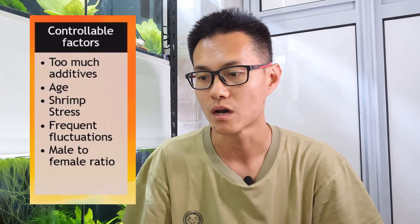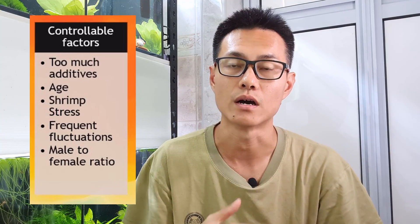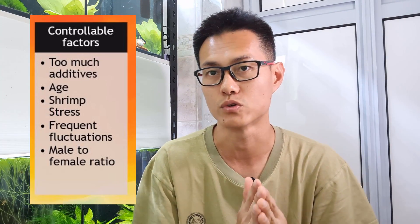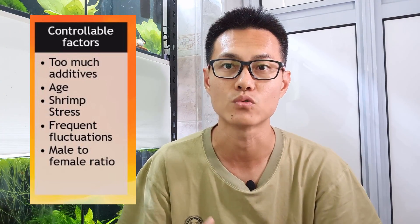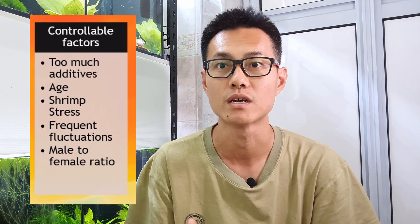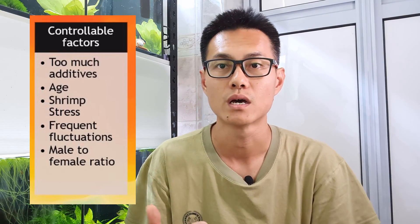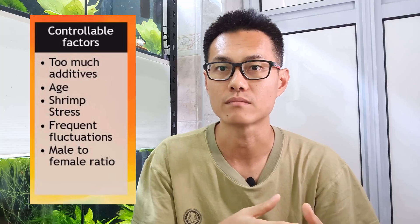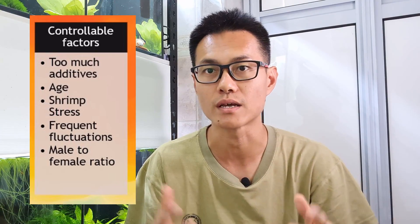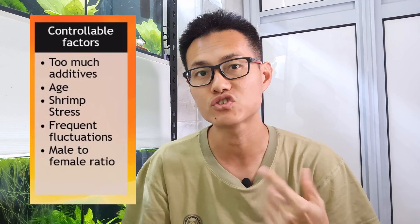Now moving to the controllable factors — there are things we can control and things we cannot. For what we can control: too many additives is one, so we advocate keeping it simple. The age of the shrimp is also something you can control — you should ask the breeder or seller to ensure you are buying juvenile or younger shrimp, so you don't end up buying an old shrimp that only gives you one or two breeding cycles before it's done.